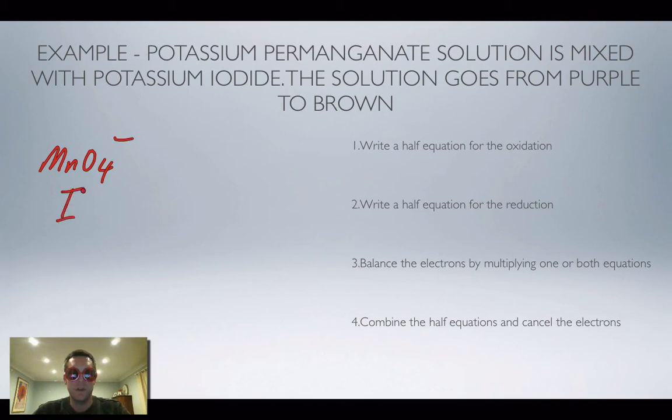Okay, oh sorry, on the observations. We're starting off with permanganate and iodide. Now this solution is starting off being purple and it's going brown. This ion is purple, it's really intense color. This one's colorless.